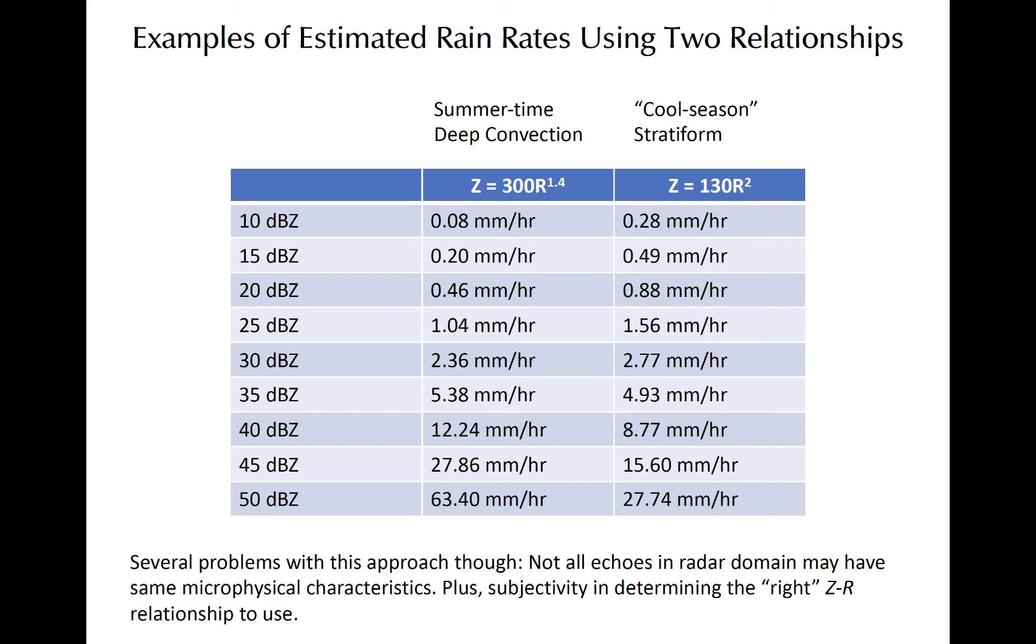However, one limitation is that all of these estimates are deterministic. As we know, a variety of drop size distributions and shapes within a range gate can give us the same Z. However, that variety may represent vastly different volumes of water.